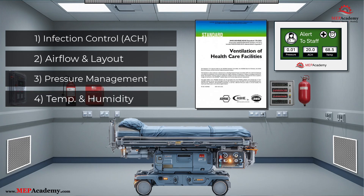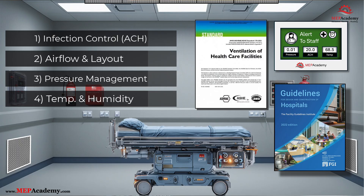4. Temperature and humidity control: Maintaining precise temperature between 68 to 75°F (20 to 24°C) and humidity between 20 to 60% RH in hospital operating rooms is critical for patient safety, staff comfort, and infection control. These conditions, mandated by ASHRAE 170-2021 and FGI guidelines, prevent microbial growth, reduce static electricity risks, and ensure optimal surgical outcomes. Building management systems (BMS) with thermostats and hygrometers enable tight control using reheat coils, humidifiers, and dehumidifiers to maintain stability, even in variable air volume systems during setback modes. This underscores the balance between environmental precision and energy efficiency in OR HVAC design.